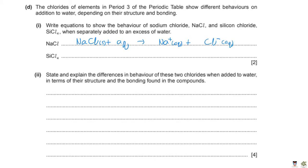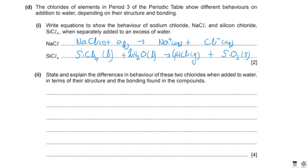For silicon tetrachloride reacting with water, we expect a quite vigorous hydrolysis reaction because it is a covalent compound. SiCl₄ is a colorless liquid at room temperature. It reacts with water as a liquid reactant to produce HCl gas — observed as steamy fumes — and in addition, silicon dioxide SiO₂, which is very insoluble in water and will be observed as a white solid.